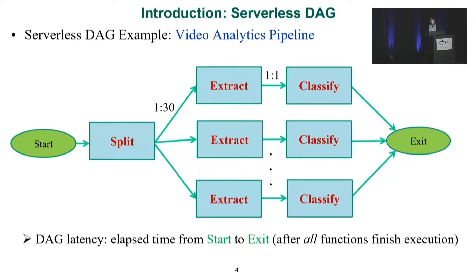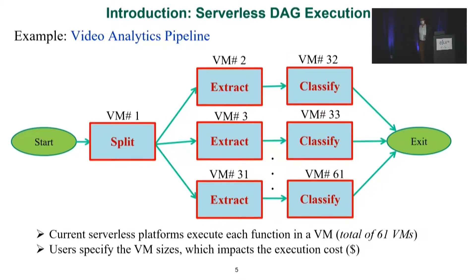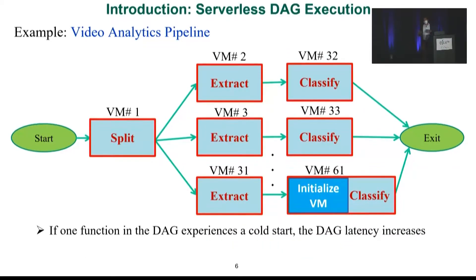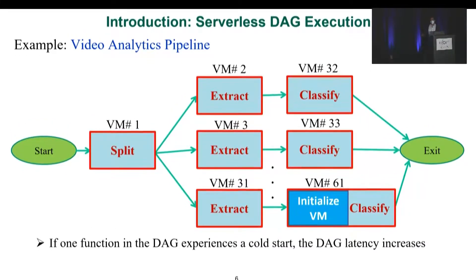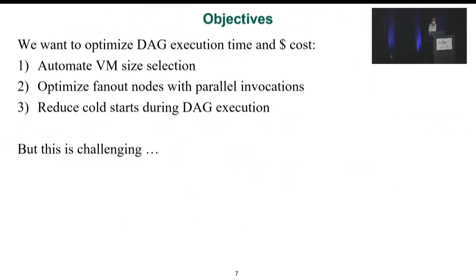We are interested in the DAG's latency, which is the time elapsed between the start and exit states after all functions finish execution. The first observation about current commercial serverless platforms is that although they allow users to compose applications from multiple functions, they still execute each function on the DAG in a separate VM — requiring 61 VMs for this example. It is still the user's responsibility to select the VM size for each function, which impacts latency and cost. Additionally, if any function experiences a cold start, there is an additional initialization time that also increases DAG latency.